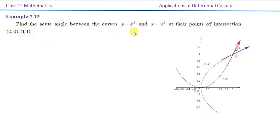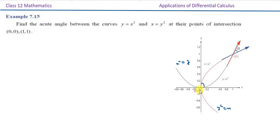x squared is equal to y — it opens upward. Next, y squared is equal to x — it opens rightward. The points of intersection are the origin (0,0), giving angle theta 1, and the point (1,1), giving angle theta 2.